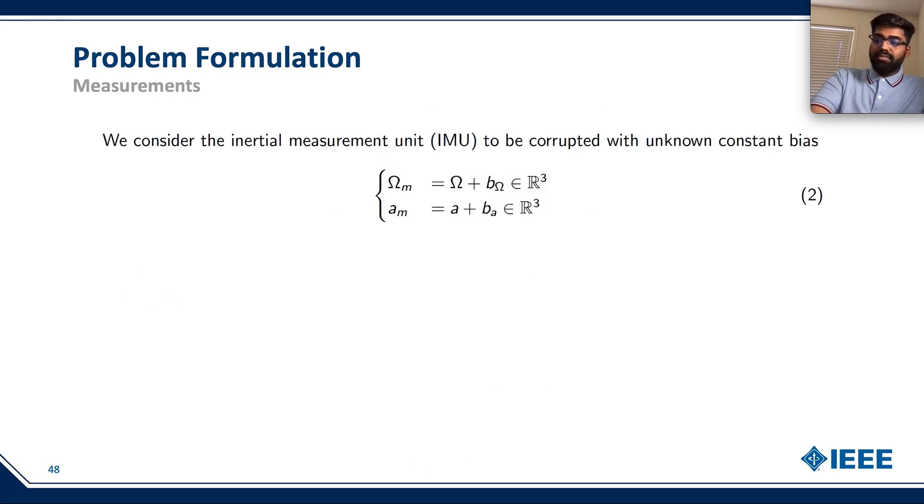Let's now see our set of measurements, which are available to us through the IMU, or the inertial measurement unit. Omega m is the measurement of the angular velocity, and a m is the measurement of the accelerometer. Our measurements are corrupted by an unknown bias, which is denoted by B omega and B A.